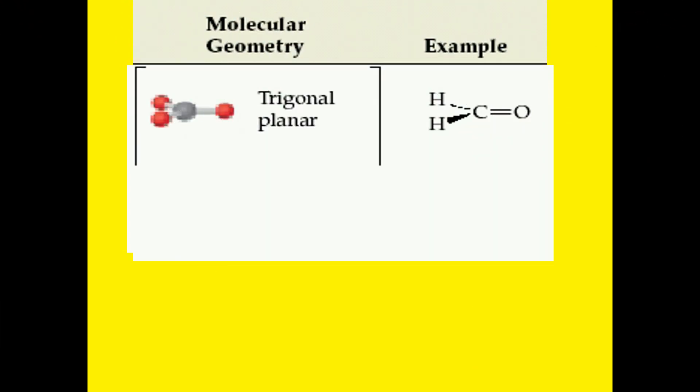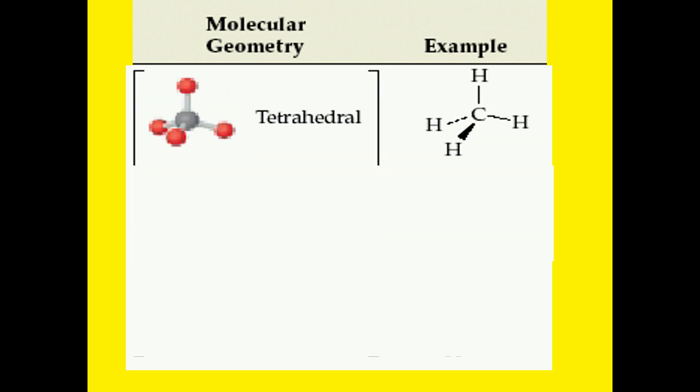Looking back at our trigonal planar, if we replace one bond with the lone pair, this always changes the name. In this example, this changes it into bent. As the shape acquires more bonds, the more ways we can modify the shape by simply replacing those bonds with a lone pair.